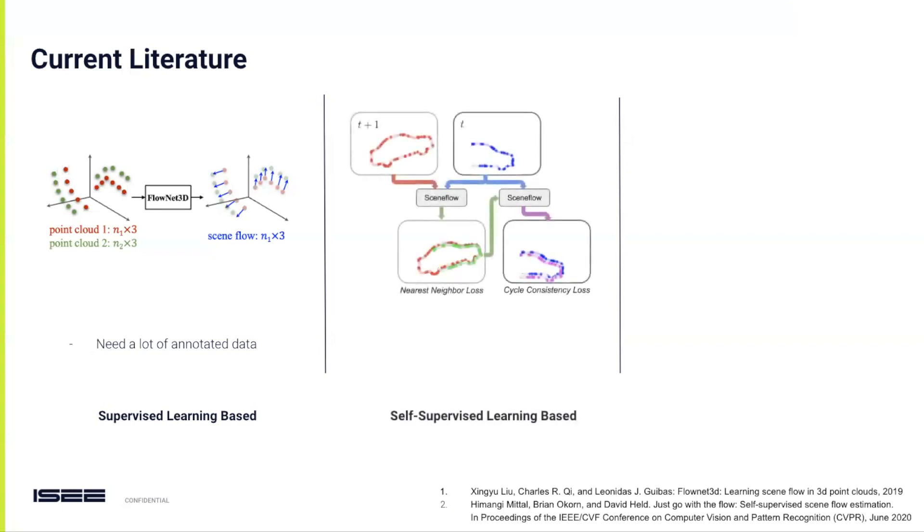Self-supervised learning-based methods, which is our domain of interest, use losses such as the nearest neighbor loss and cycle consistency loss during training. Their advantage? They bypass the need for labeled data. The downside? They are computationally intensive.